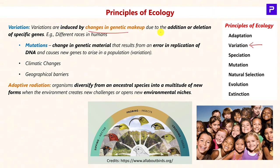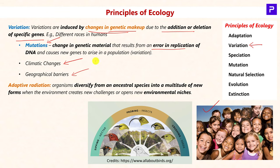The next process in principles of ecology is variation. Variations are induced by changes in genetic makeup due to addition or deletion of a specific gene. This is different from adaptation in that adaptation may or may not involve changes at the genetic level, whereas in variation the changes occur due to changes in genetic makeup. Variations may also be due to mutations — errors in DNA replication or damage to a gene from excessive exposure to UV light or ionizing radiation. Variations can also be brought about by prolonged climatic changes or geographical barriers, resulting in different human races, for example.